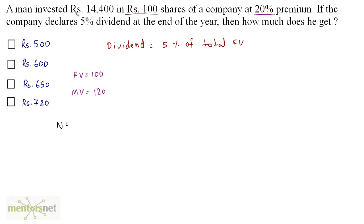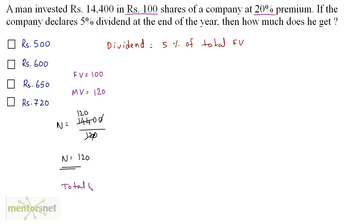The number of shares equals total amount invested divided by the market value of one share: 14,400 ÷ 120 = 120 shares. The total face value is then 120 × 100 = Rs 12,000.